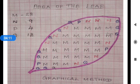Now, count all the number of squares and write them in the respective places — M, N, P, Q. In this model, I have counted M = 28 whole squares, N = 9 squares that are more than half, P = 4 squares, and Q = 12 squares.